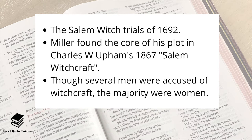In January 1692, Reverend Parris's daughter Betty, aged nine, and her cousin Abigail, aged eleven, apparently became afflicted with contortions and fits, making complaints about being pinched and pricked with pins. After the local doctor found no physical evidence for their conditions and other girls experienced the same symptoms, witchcraft was suspected. Parris's slave Tituba was asked to bake a witch cake to discover who was responsible. Soon after, Thomas Putnam and other men accused Tituba, Sarah Good, and Sarah Osborne of causing these afflictions.